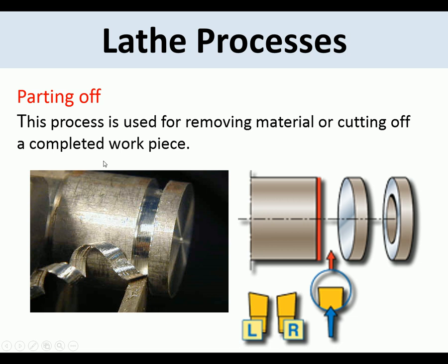Parting off: this process is used for removing or cutting off material from a completed work piece. Generally a narrow tool goes in, and once it reaches the center it removes a disk. If the piece is bored prior to being removed, you end up with a finished component. So this is parting off.